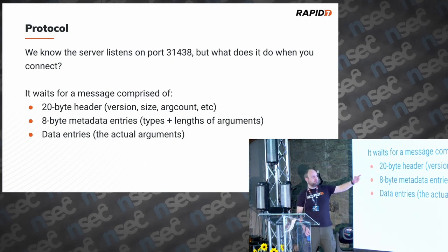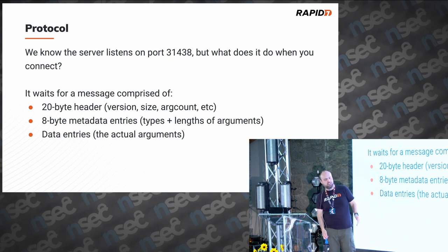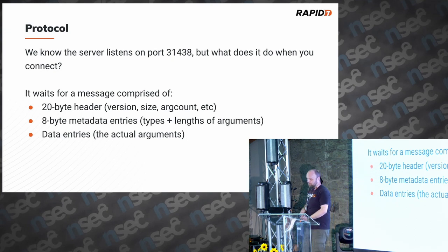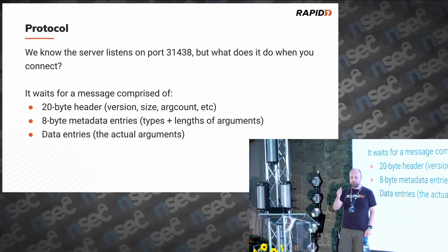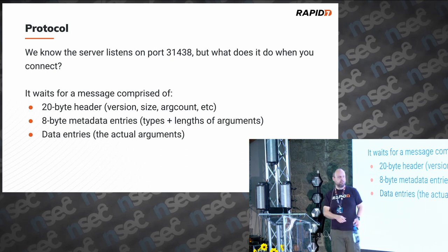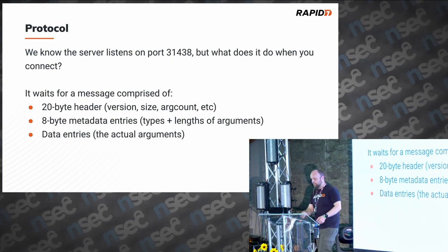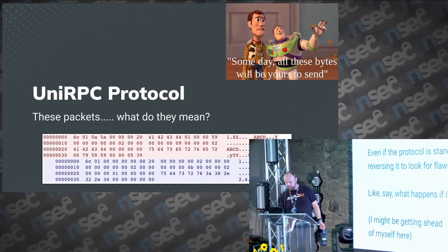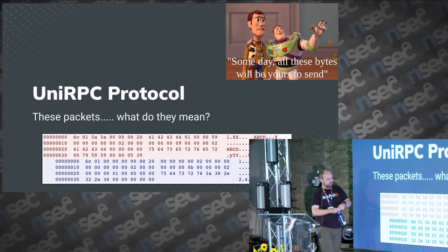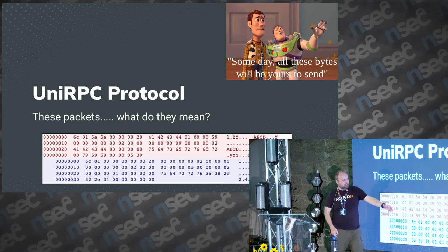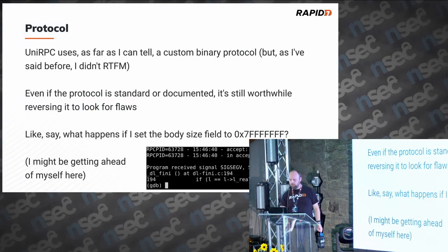Every message has a 20-byte header containing the version, the size, number of parameters, and so on. Then there's some metadata which describes types — so basically the client will say 'I'm going to send you a string, an int, an int, and a string.' That's what the metadata is. Then the data section contains the actual values. Looking at a packet: it's a 20-byte header, 16 bytes of metadata, and then the rest is the actual strings and data.